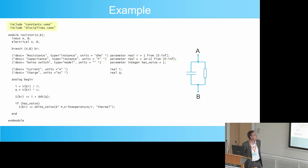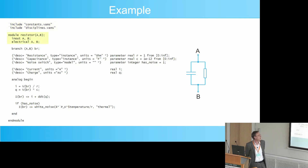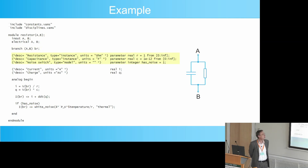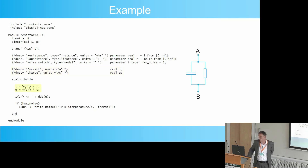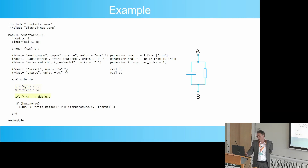The description starts with some includes and then proceeds with the header of the model where we find its connections, its terminals, followed by the branches comprised by the model. Next, we have the description of the parameters that can be set by the user of the model. The model can also compute various quantities which can then be extracted from the simulator by the user. In our case, these are the resistor current and the capacitor's charge. The main part of the model computes all these quantities and also computes the contributions to the model's branches.